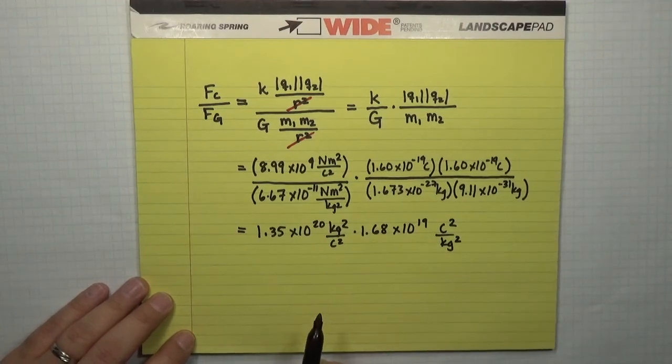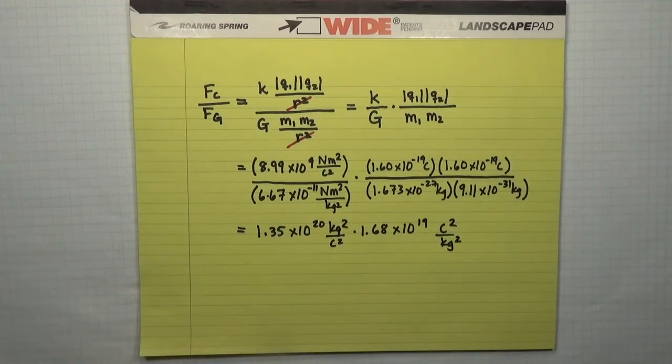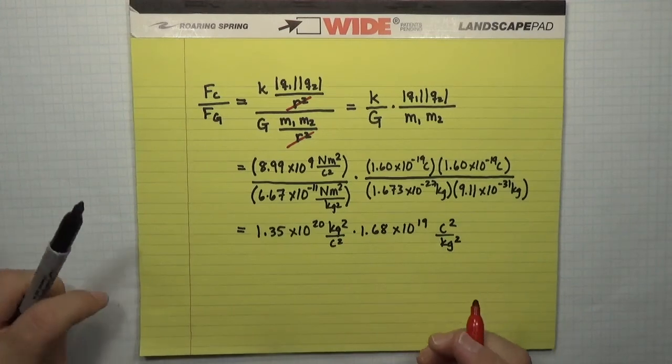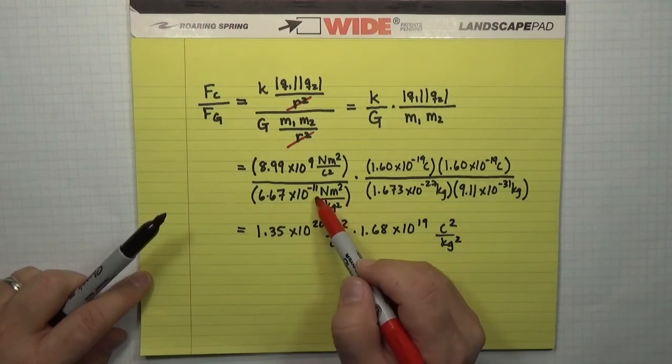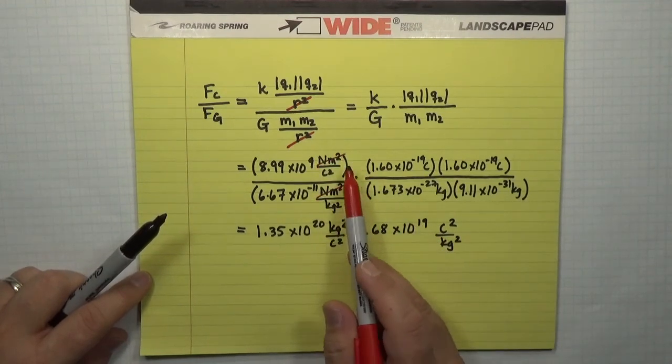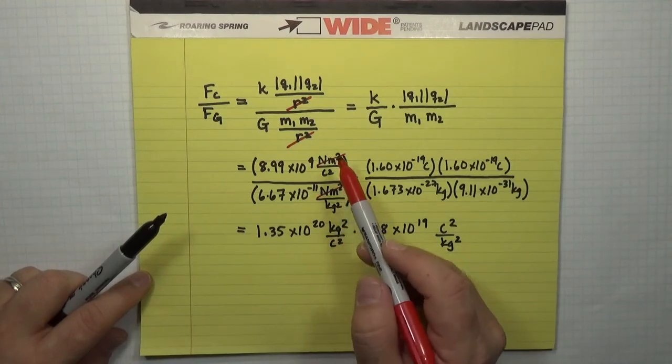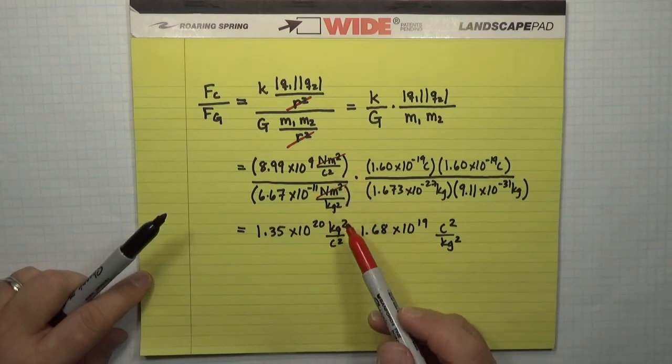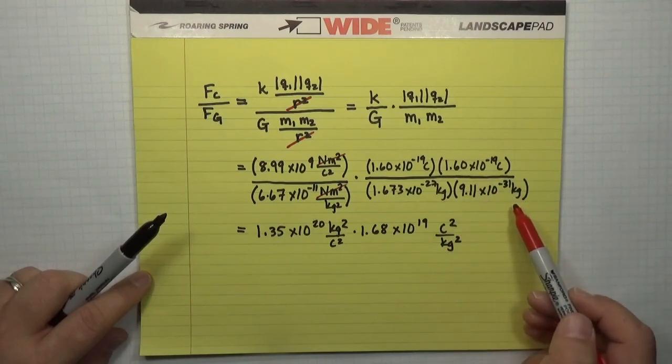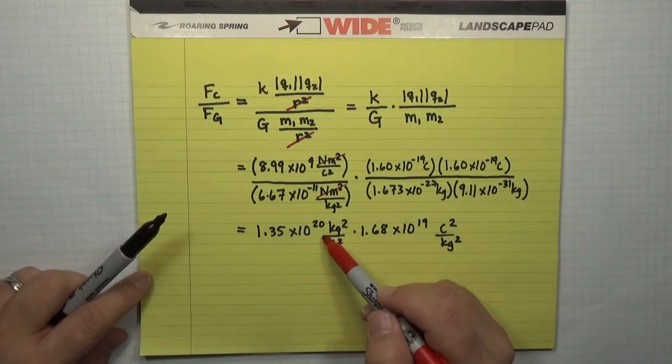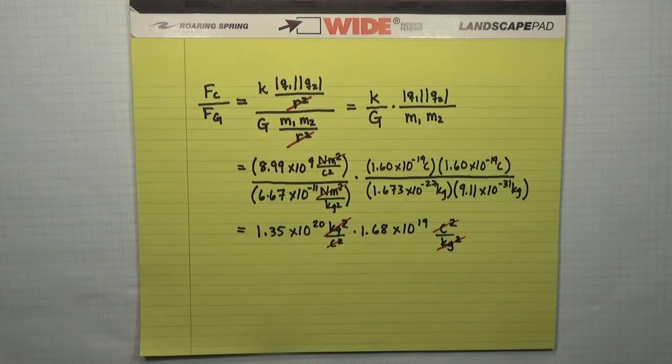I like to go through this interstitial step in order to make sure that all my units work out right. Unit tracking is one of the easiest things you can do to ensure that you're getting the right answer as you're doing calculations. So, at this step up here above, I had canceled out these Newton meter squareds because there's one above and one below, so they cancel out. And this 1 over kilograms squared in the denominator combined with the 1 over coulomb squared in the numerator to give me this kilogram squared per coulomb squared. Over here, I got coulomb squared per kilogram squared from this ratio. And what you see is they cancel out, leaving me with a dimensionless number, which is exactly what I would expect from a ratio.